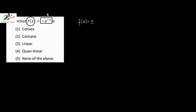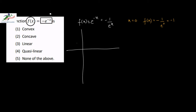Now f(x) can be written as e to the power minus e to the power minus x, which is equal to minus 1 by e to the power x. So if I put the value of x equal to 0, then f(x) becomes minus 1 by e to the power 0, or minus 1. If I plot this on the x-axis — this is my y-axis — so at x equal to 0, y equal to minus 1, so (0, -1) is a point on this curve.